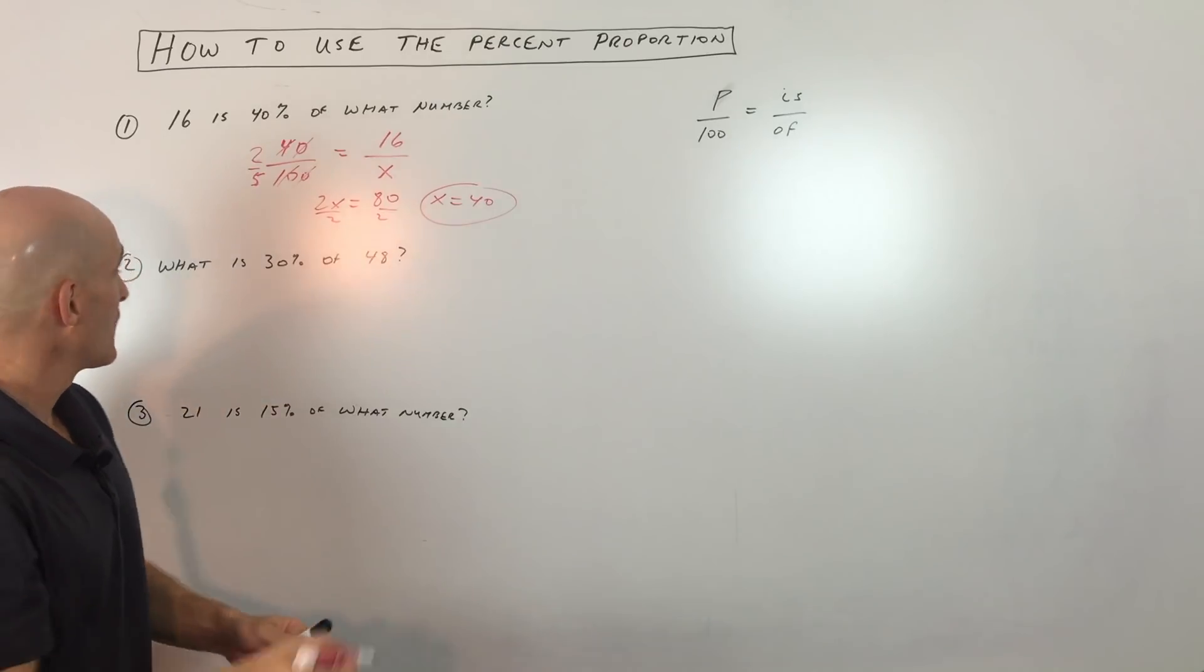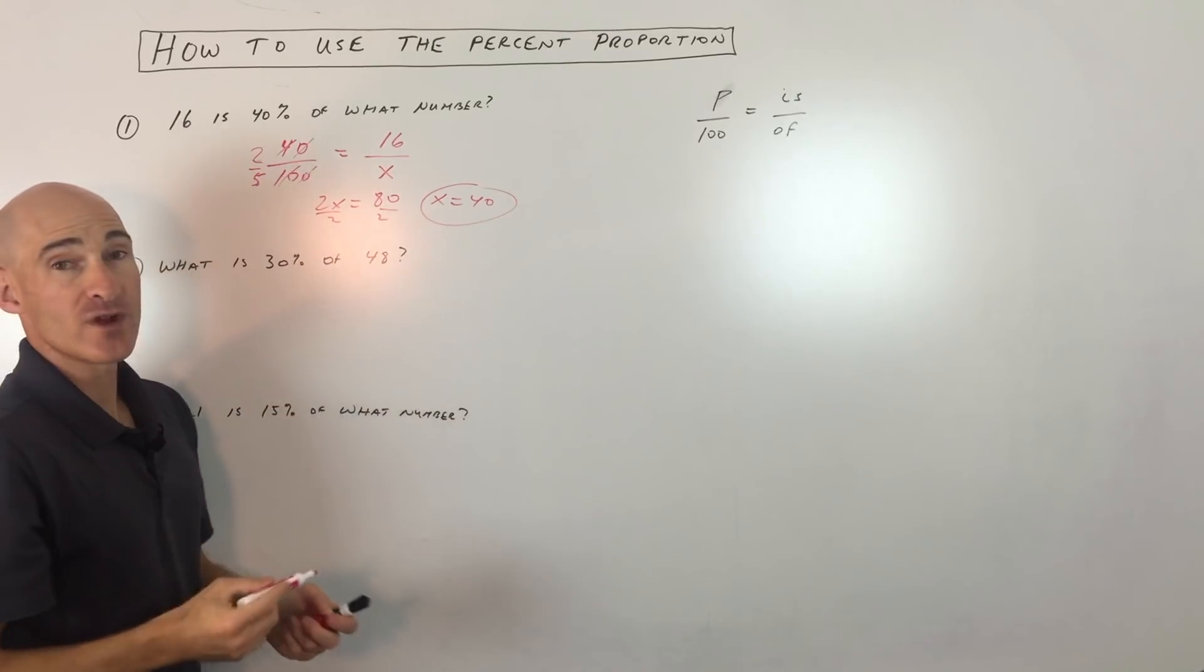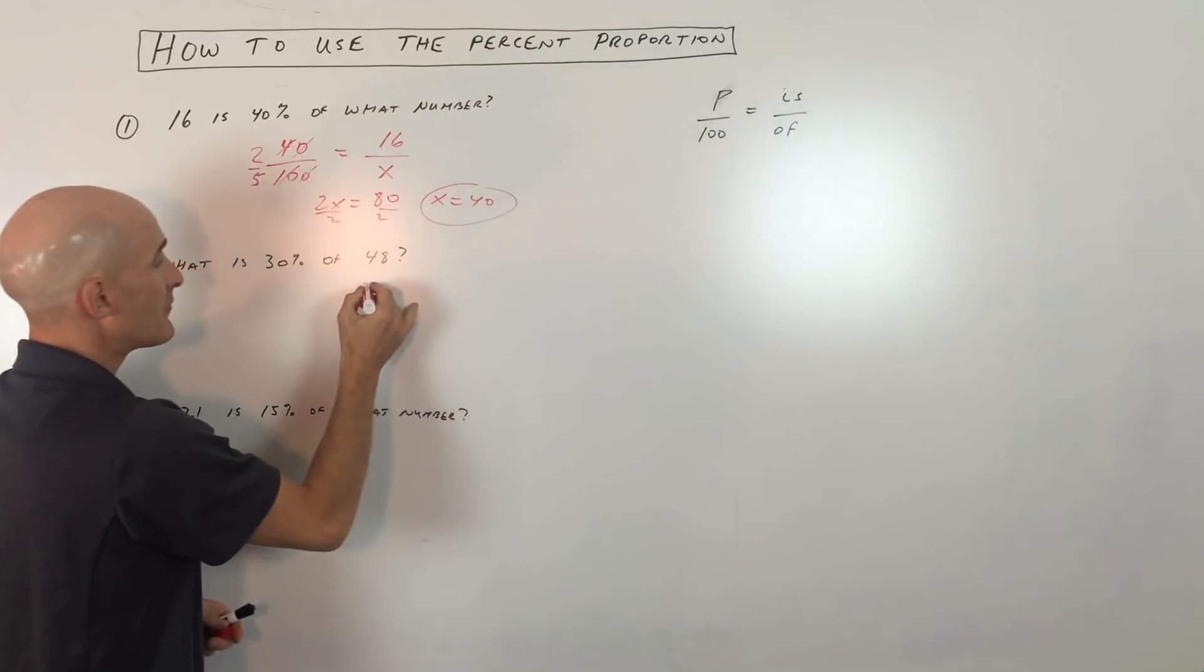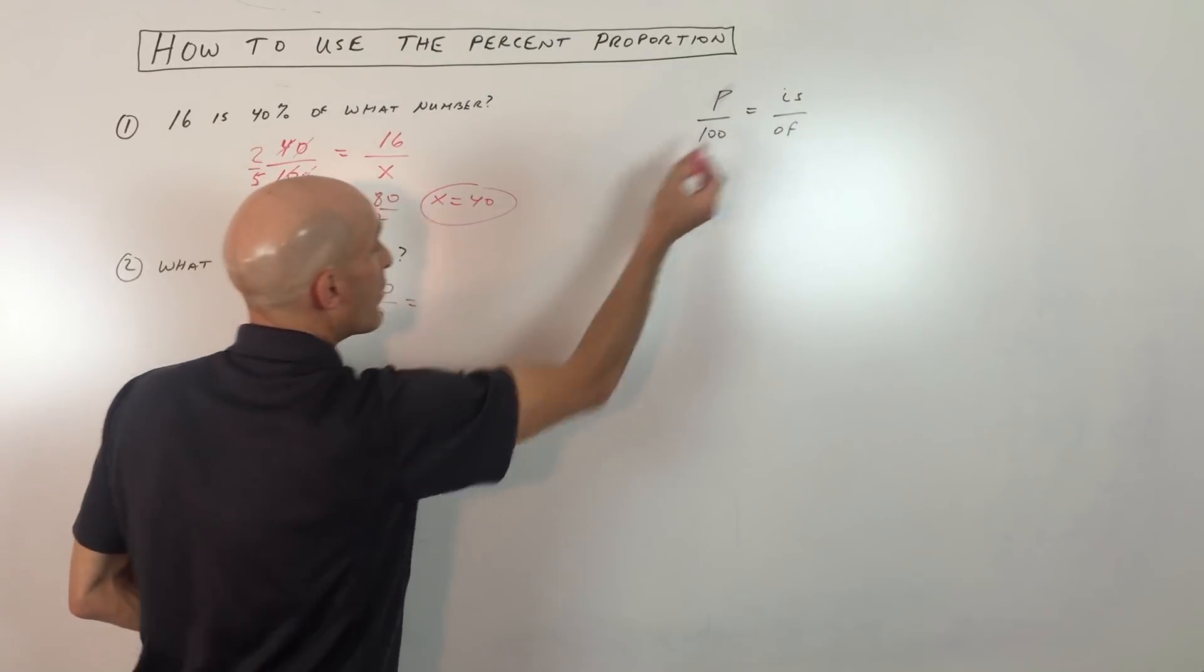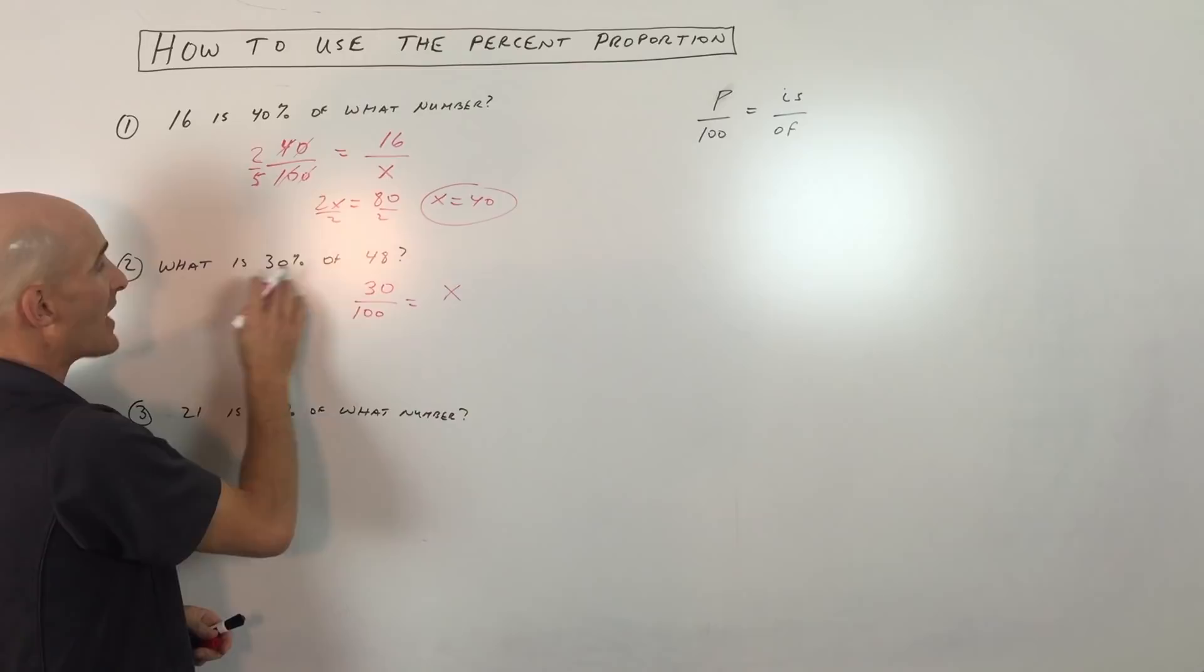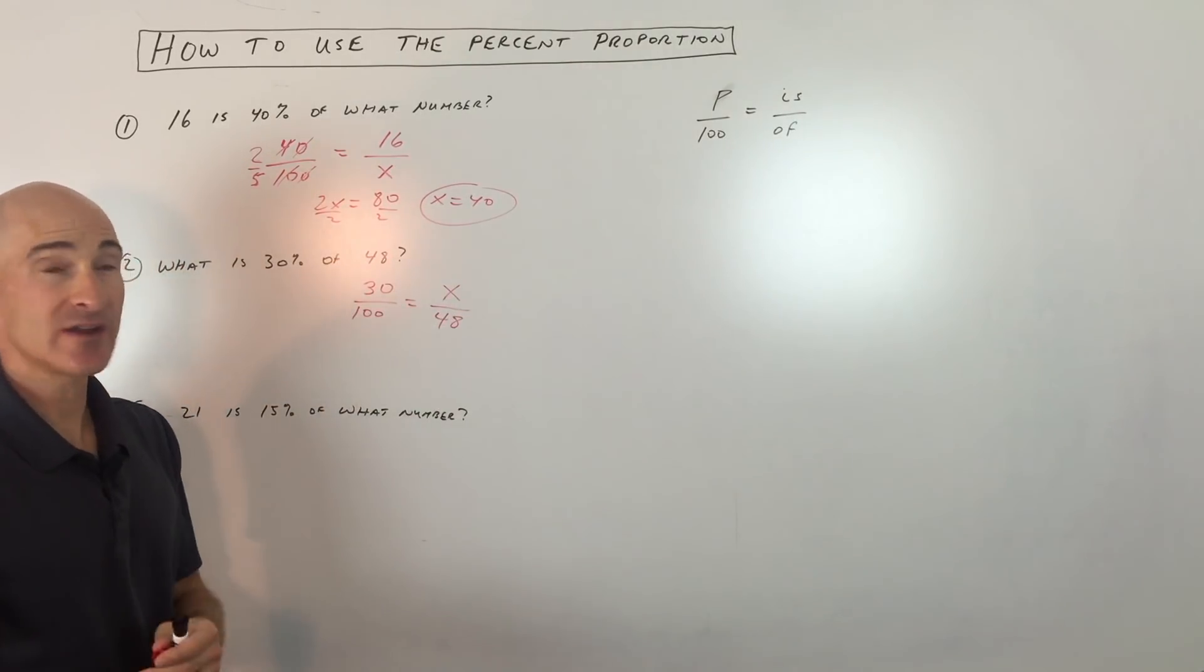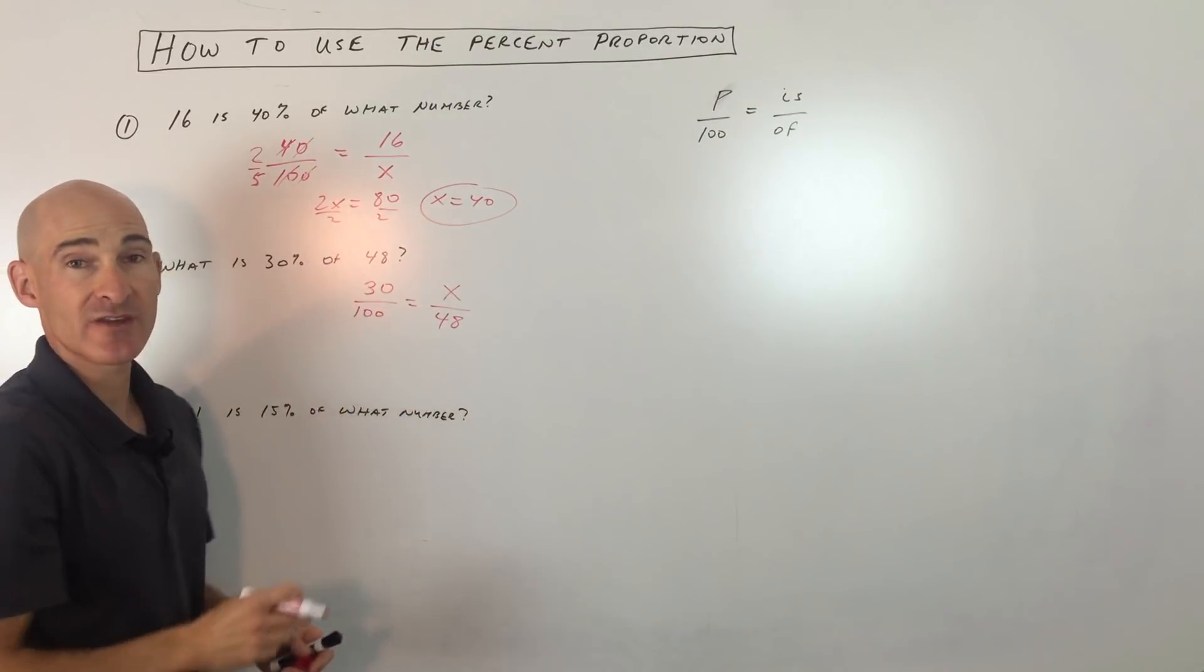Let's go into example number 2. This one says, what is 30% of 48? So here we say 30%, that's the P, so 30 parts out of 100, equals, now what is, we don't know what the part is, the is, so that's going to be X, of 48, meaning out of 48. So you see, we don't know is, out of 48, and 30% is 30 parts out of 100.